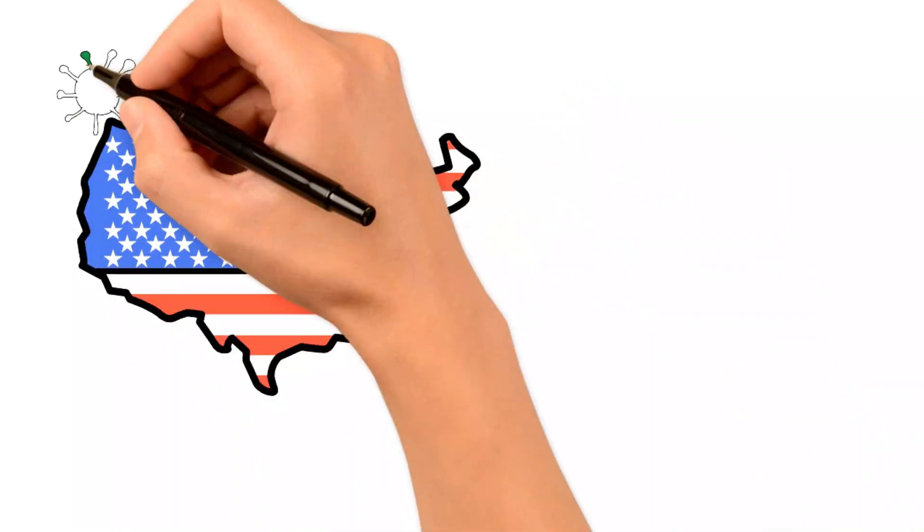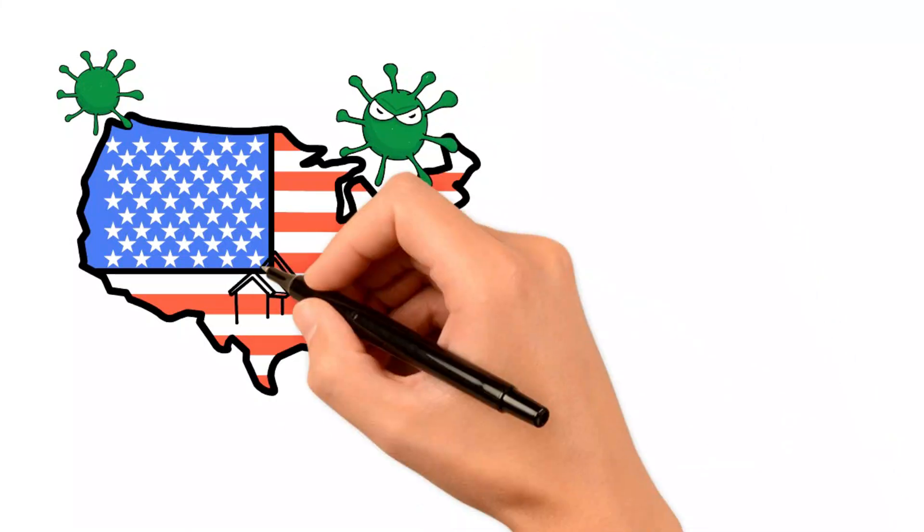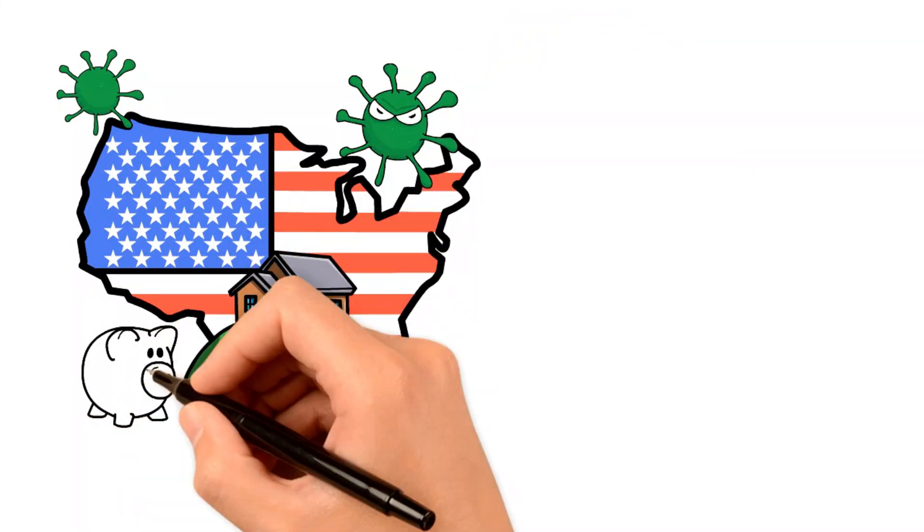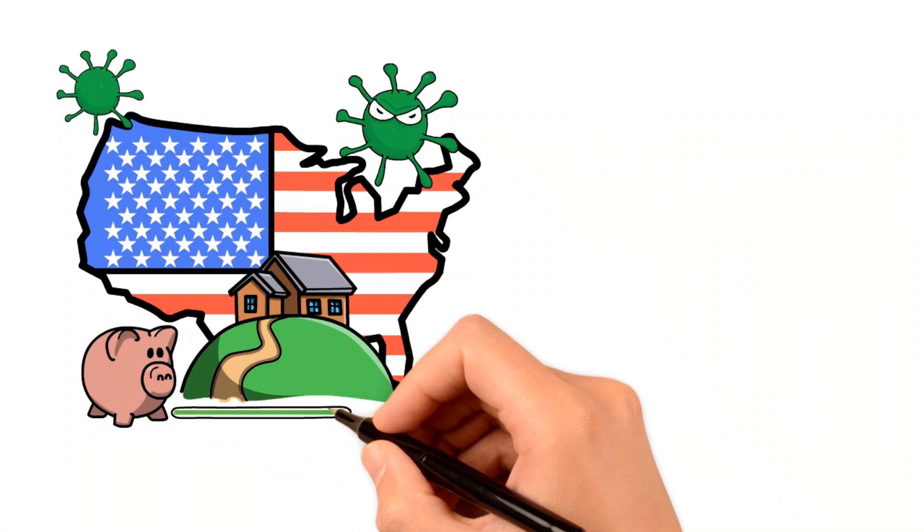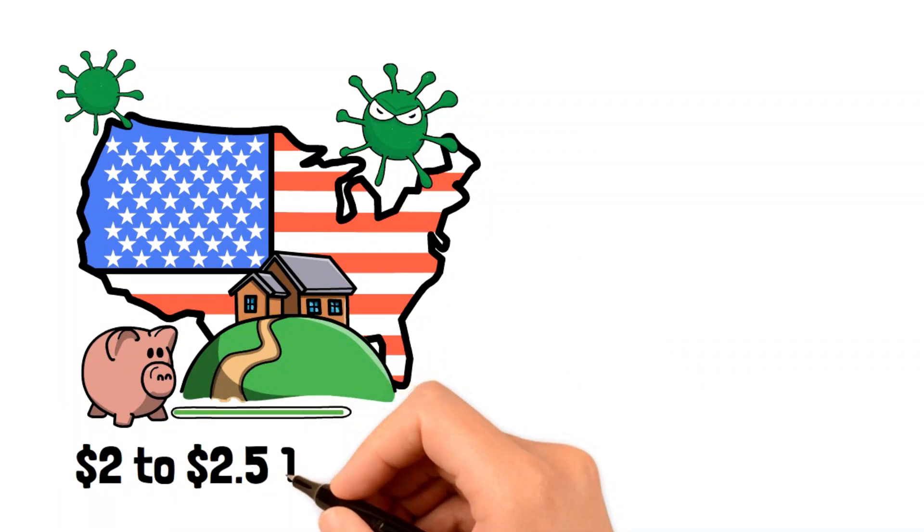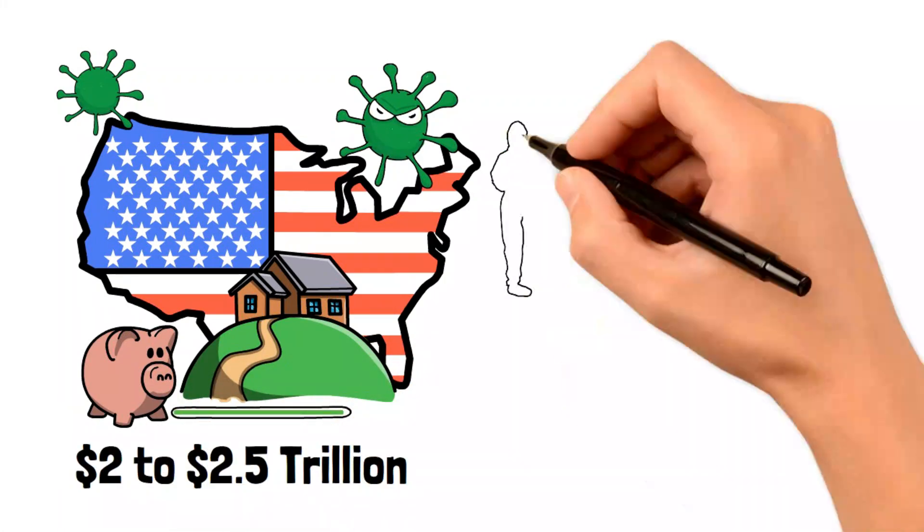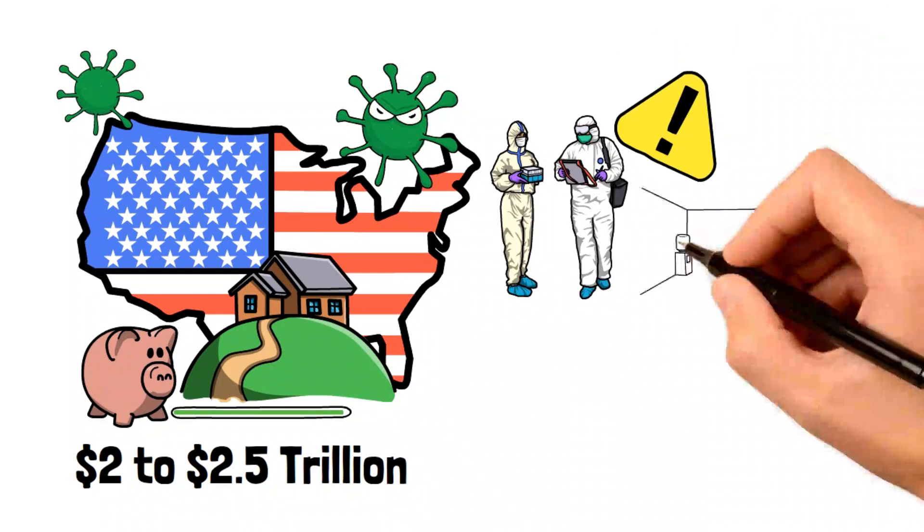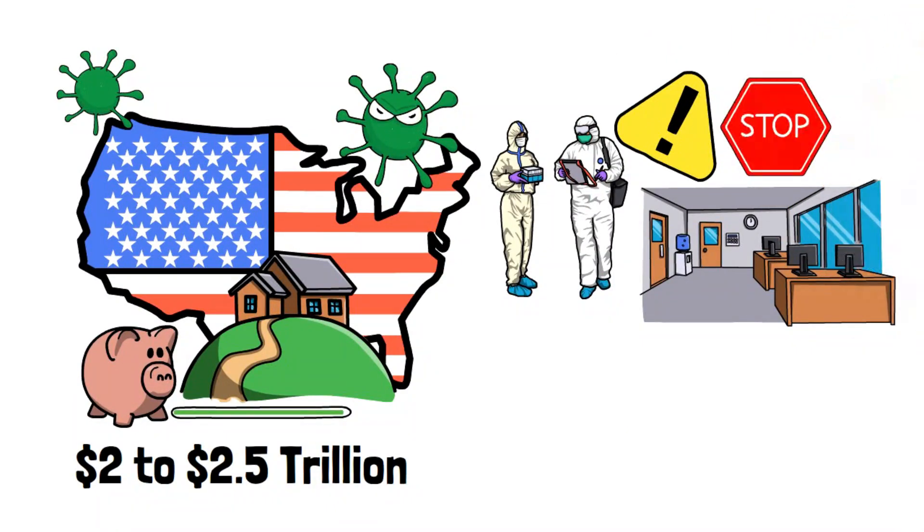During the initial phase of the pandemic, households in the United States saved significantly more than anticipated, amassing an additional $2 to $2.5 trillion. This surplus can be attributed to changes in spending behaviors and the economic uncertainties prevailing at the time.